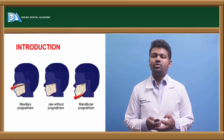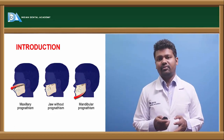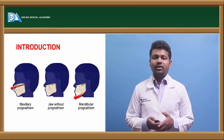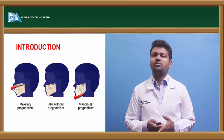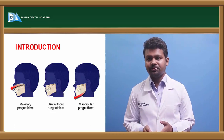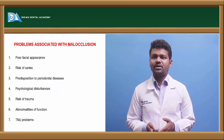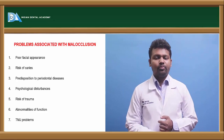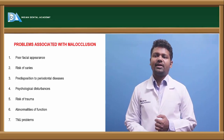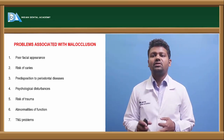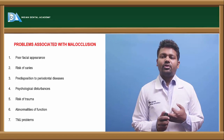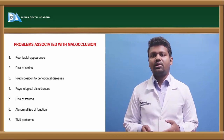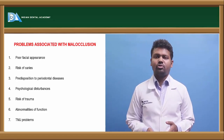The epidemiology of malocclusion has been variedly studied in India, with many conclusions drawn regarding malocclusions. The problems associated with malocclusions are poor facial aesthetics, risk of caries, predisposition to periodontal diseases, psychological disturbances, trauma, abnormalities of function, and TMJ problems.